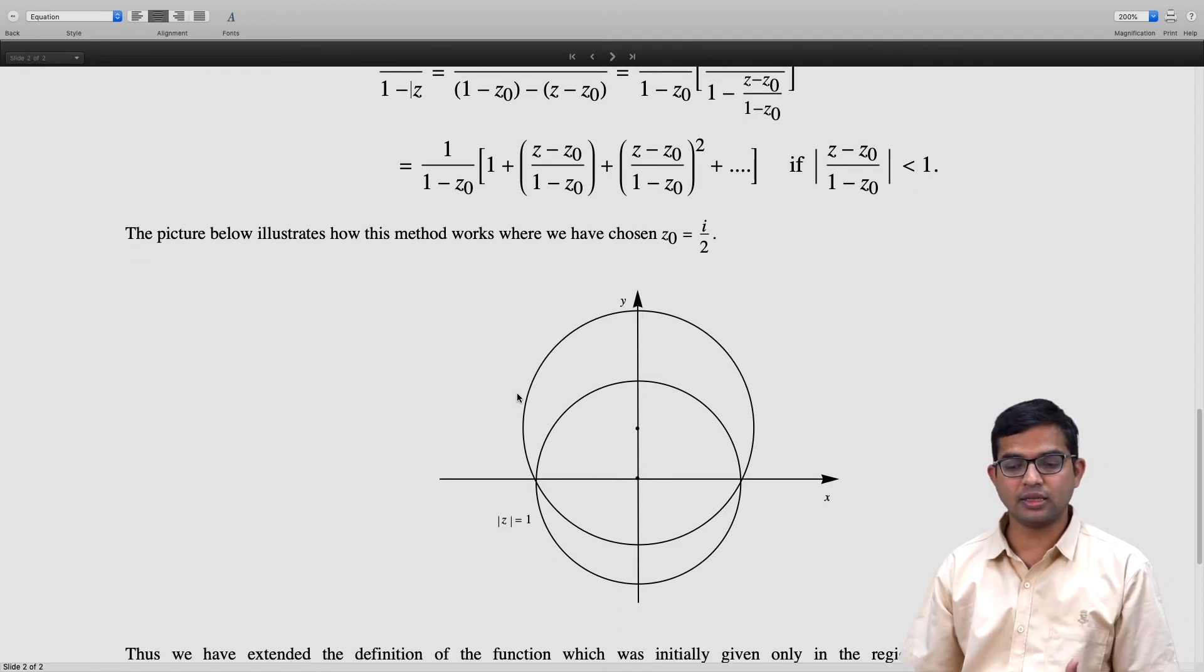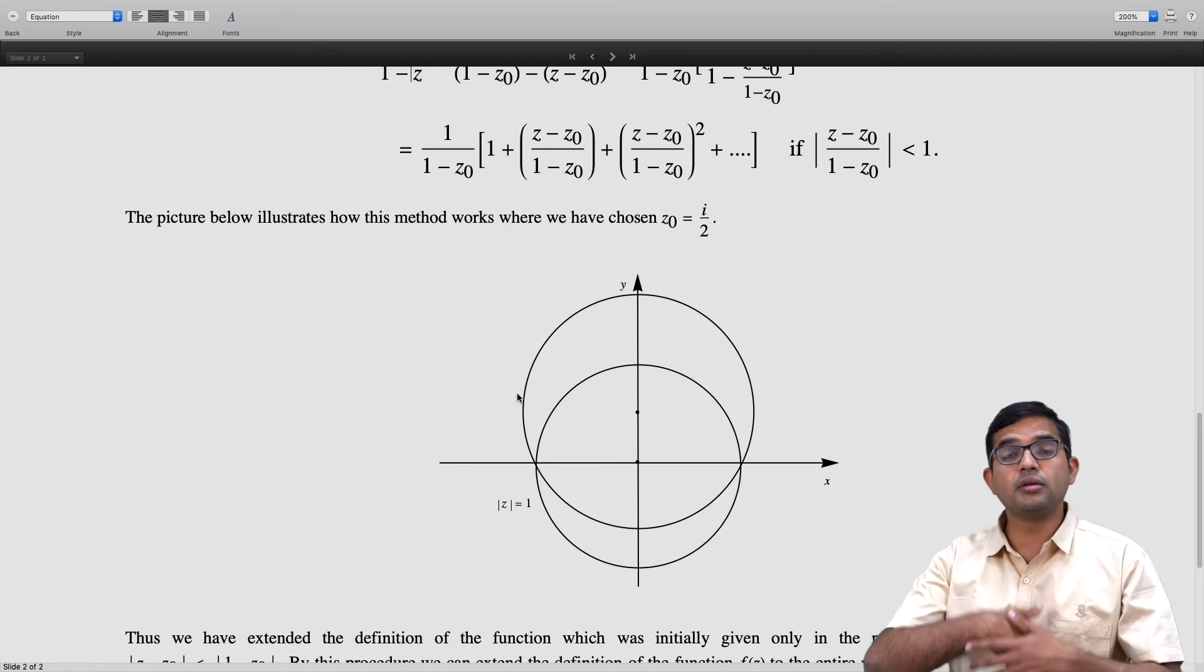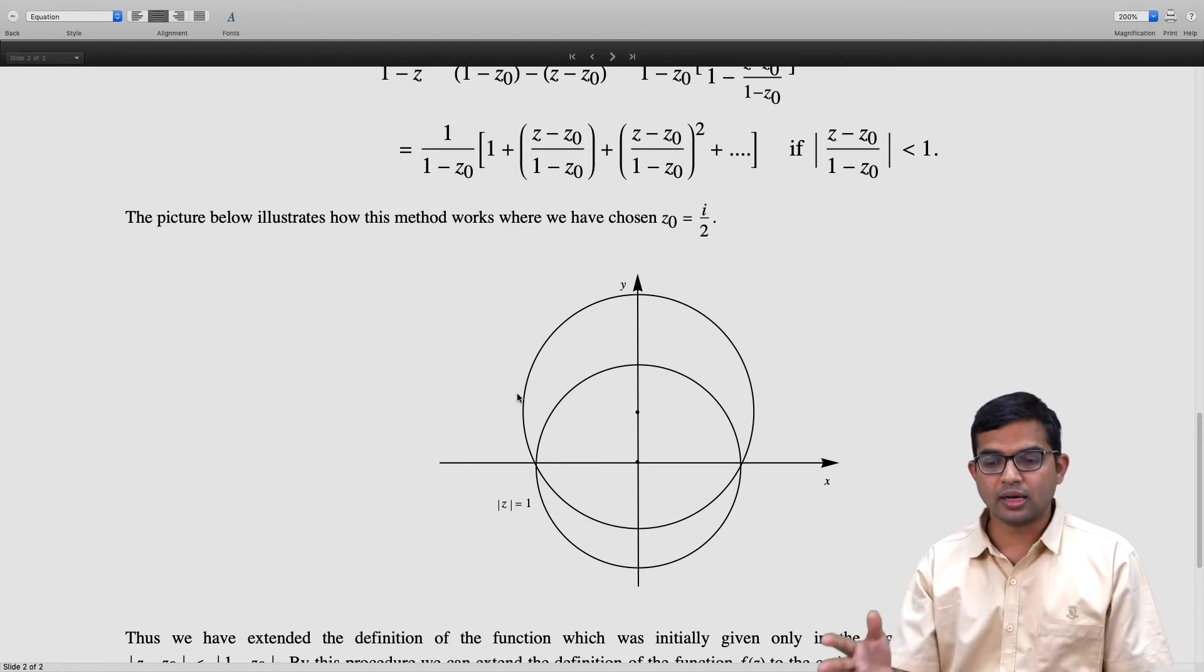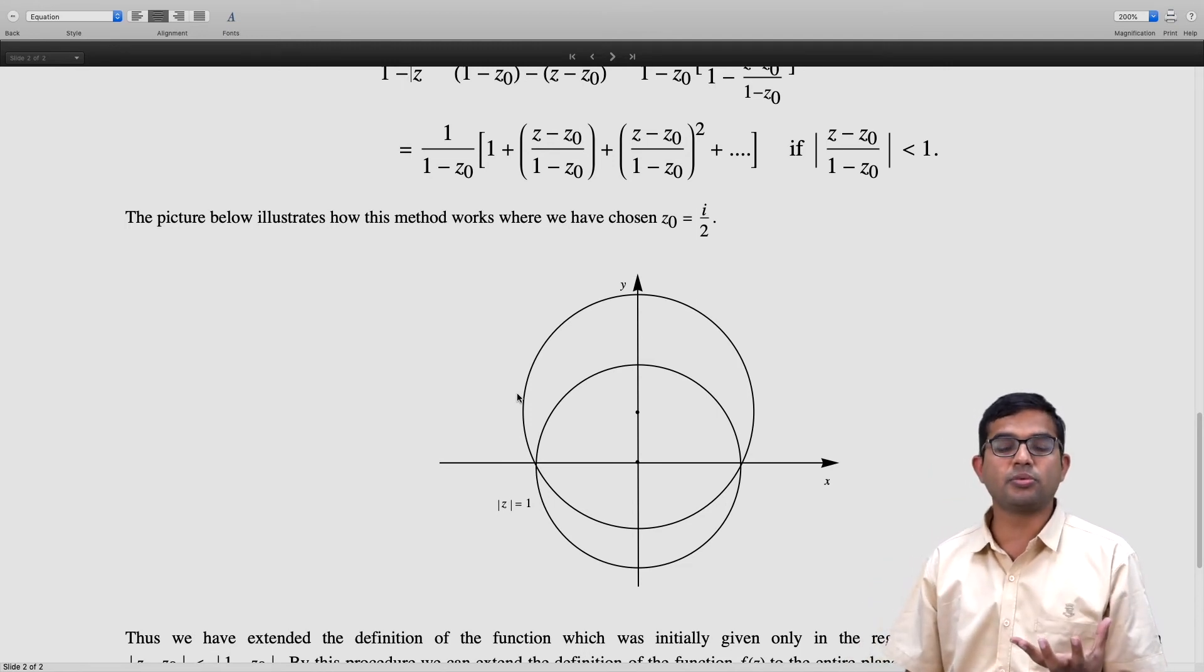The key point is that we started with a function which was analytic in a region, but we managed to find an analytic function which is like a master function for this, which is valid in a much bigger domain. In this case it turns out to be the entire plane except that point, and this was entirely forced upon us just from our information that we had in a small region.